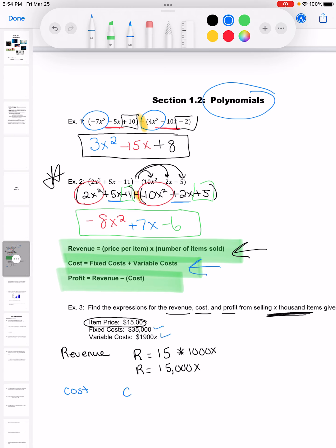So the cost, I'm going to call it C, is going to be the fixed cost plus the variable cost. And that's going to be my answer for the cost function. I'll box in my answer for the revenue as well.